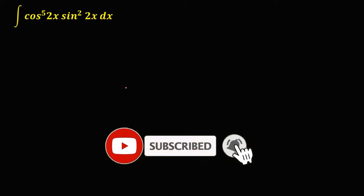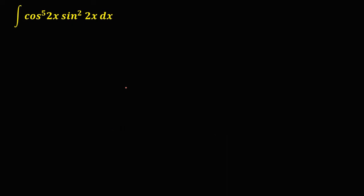Let's have this problem: the integral of cosine to the power 5 of 2x times sine to the power 2 of 2x, dx. In finding the integral of sine and cosine, always work on the function with the odd exponent. Since the exponent of cosine is 5, we're going to work on this function.